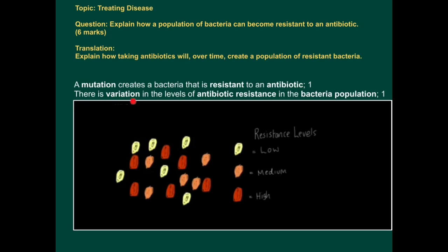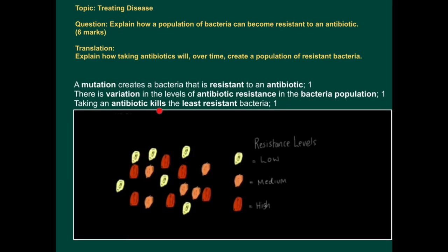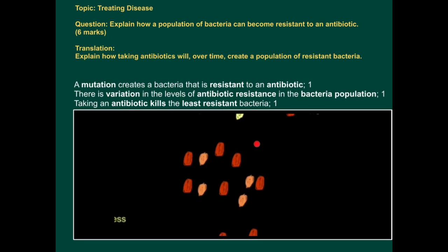So now there's variation in the levels of antibiotic resistance in the bacteria population — some are very resistant and some have very little resistance. Taking an antibiotic kills the least resistant bacteria. All the yellow dots have gone — they represented those bacteria with least resistance to the antibiotic.